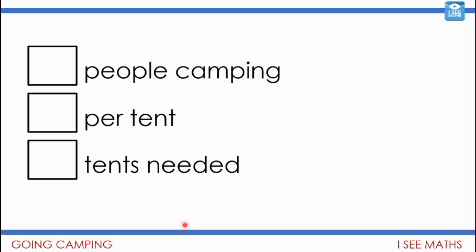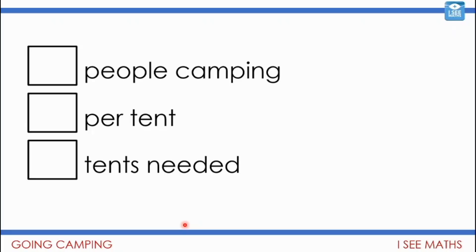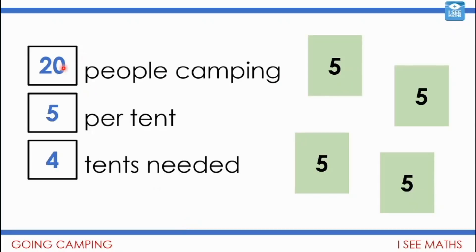I wonder if you can think of your own version — maybe two or three versions. How many people could be going camping? If it's that many, how many per tent, and then how many tents would be needed? Pause the video to come up with a few different answers. For example, if 20 people are camping with five per tent, they'd need four tents. I wonder if all of your examples have: number of people per tent multiplied by number of tents equals number of people camping.